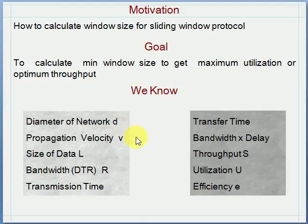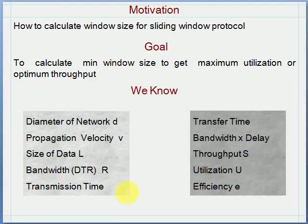To solve examples on network performance, we need information about four parameters: diameter of network D, propagation velocity V, size of data to be sent L, and bandwidth R. With these four parameters, we can calculate propagation time and transmission time. The addition of propagation time and transmission time gives us the transfer time.